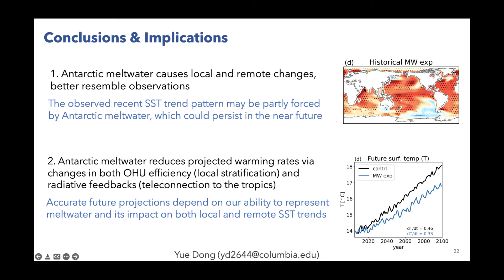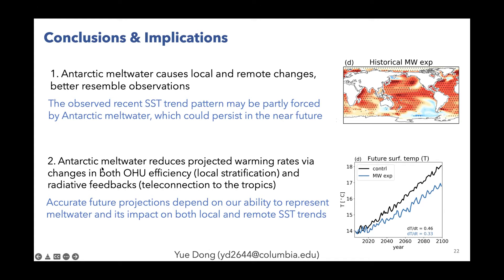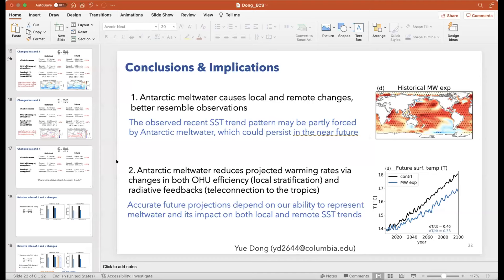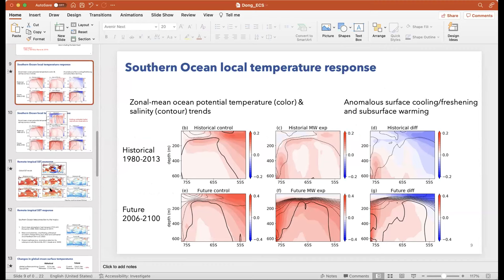Thank you, that was a great talk. A quick question: can you talk more about exactly how the addition of meltwater increases ocean heat uptake? Is it a change in overturning in the Southern Ocean? Yes — the Southern Ocean has climatologically upward heat transport from warmer subsurface to colder surface. Adding anomalous freshwater increases upper ocean stratification, reducing this upward heat flux, causing anomalous heat accumulation at depth.